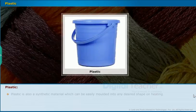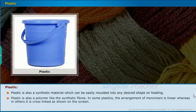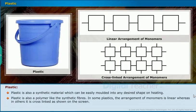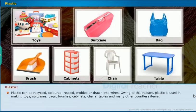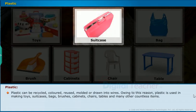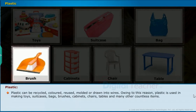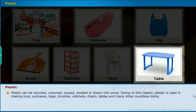Plastic is also a synthetic material which can be easily molded into any desired shape on heating. Plastic is also a polymer like synthetic fibers — in some plastics the arrangement of monomers is linear, whereas in others it is cross-linked. Plastic can be recycled, colored, reused, molded or drawn into wires. Owing to these properties, plastic is used in making toys, suitcases, bags, brushes, cabinets, chairs, tables and many other items.